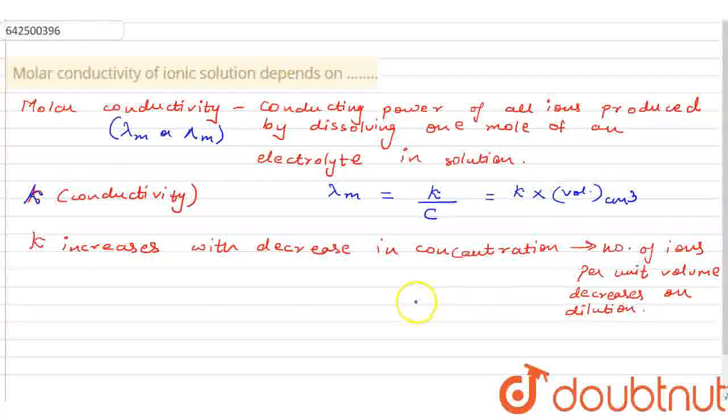So, definitely when there would be a decrease in the concentration, decreases on dilution, yes, my kappa, that is the conductivity value, would increase. Are you getting my point? And similarly, this is true for both strong and weak electrolytes.